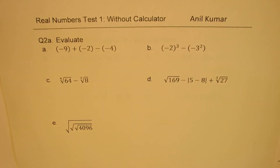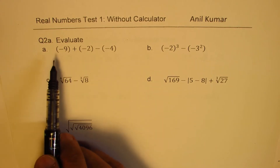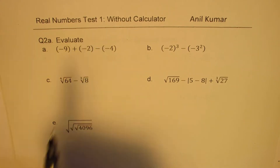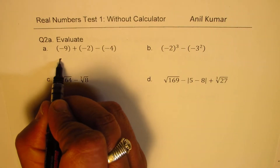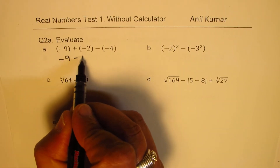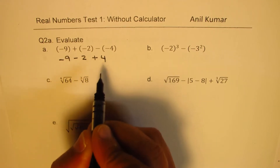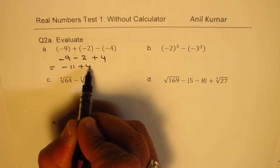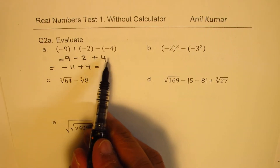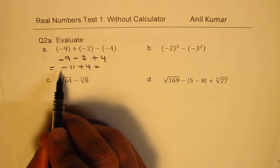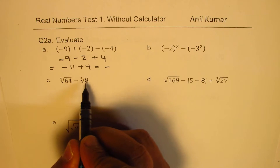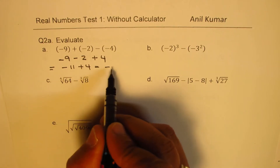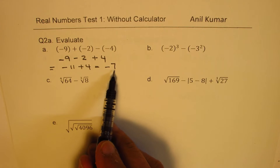Question 2 asks us to evaluate some values. The first part involves simple integers: negative 9 plus negative 2 minus negative 4. When opening the bracket, plus-and-minus becomes negative, and minus-and-minus becomes positive. So we get minus 11 plus 4. Going left to right with negatives and positives, the difference is 7, giving us minus 7 as the answer.